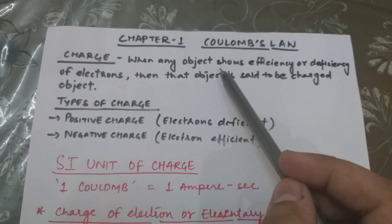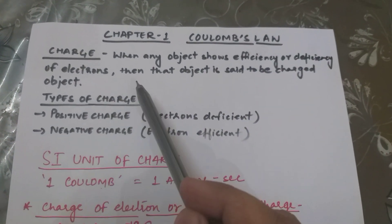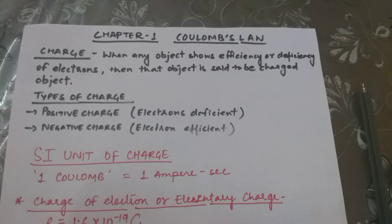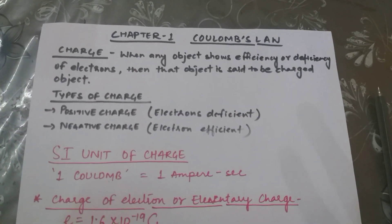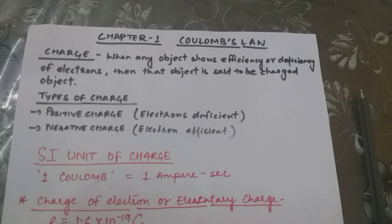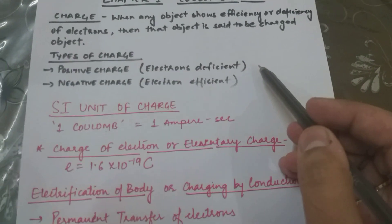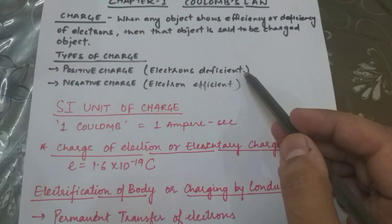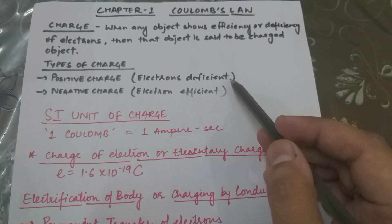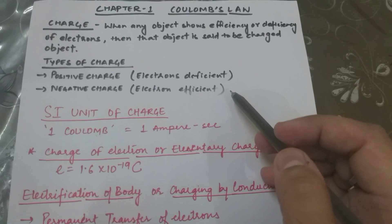When any body or object shows excess or deficiency of electrons, that object is said to be a charged object. This means if any body donates or gains electrons, that body is said to be a charged body. There are two types of charge. The first is positive charge — when any object shows a deficiency of electrons, that object is positively charged.